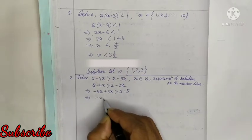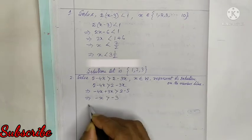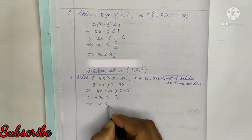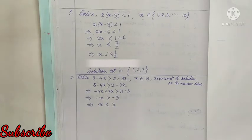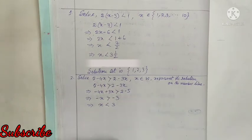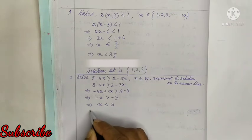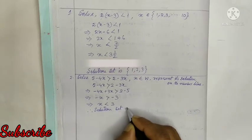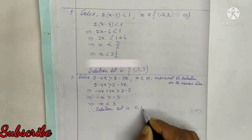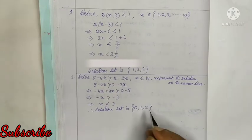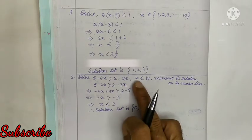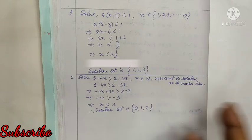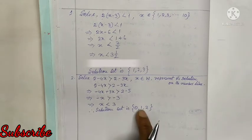Continuing with the next question — solve 5 minus 4X greater than 2 minus 3X, where X belongs to whole numbers. Working gives minus X greater than minus 3, so X less than 3. Since X is a whole number and whole numbers start from 0, the solution set is {0, 1, 2}.